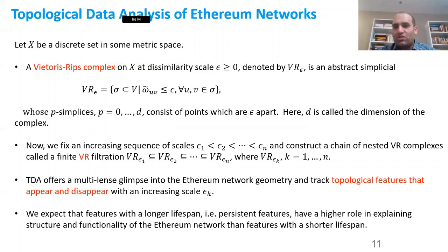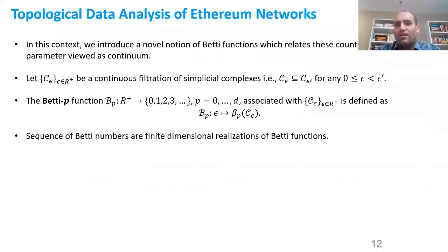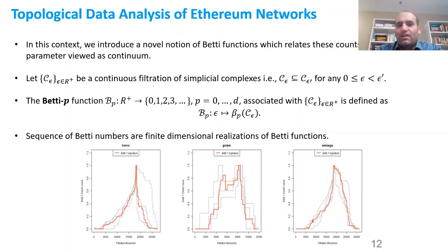We hope these persistent features will have a higher role in explaining the structure and functionality of the Ethereum network, and we use them to predict price. We introduce a novel notion of a Betti function: we do a continuous filtration of simplicial complexes for each epsilon value, compute Betti 0, Betti 1, and Betti 2, and the sequence of Betti numbers then becomes a finite-dimensional realization.